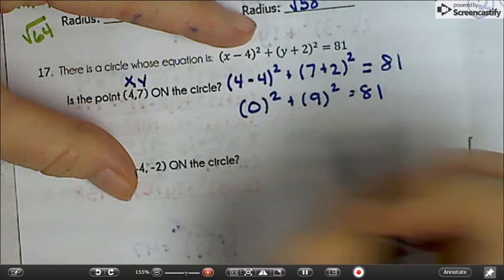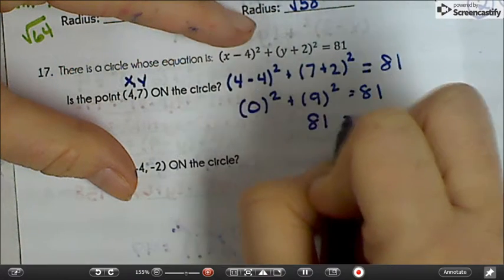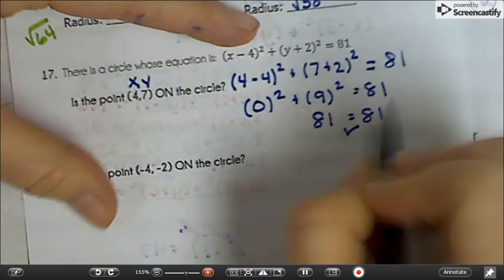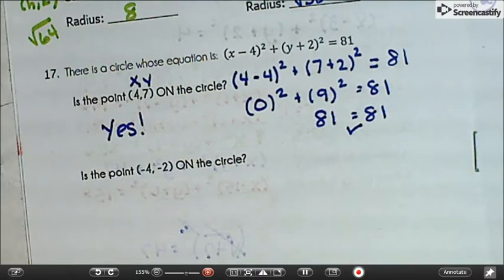Well, 0 squared is just 0. And 9 squared is 81. 81 equals 81. So yes, 4, 7 is on that circle.